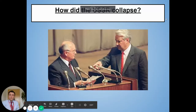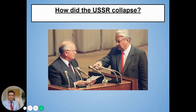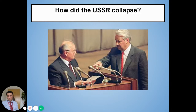Hello and welcome back to your second lesson this week and the final lesson on the Cold War itself. We've looked at how communism collapsed in Eastern Europe and today we're going to look at how did the USSR collapse — how was it that Russia ended up turning from communist to capitalist?